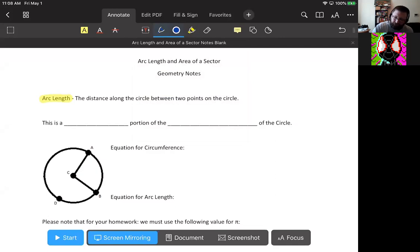Now we should keep in mind that this is a fractional portion of the circumference of the entire circle, which means our arc length equation is actually based on the equation for the circumference of a circle. So our equation for circumference of a circle was 2πr. That's for the entire circle.